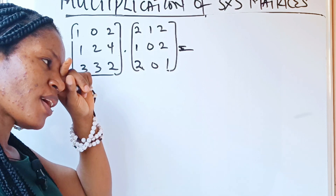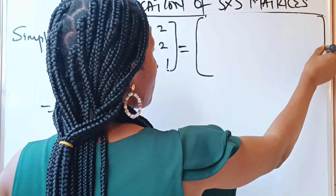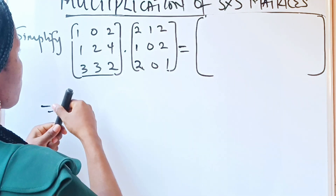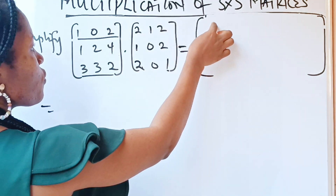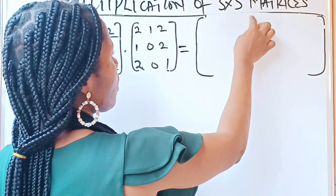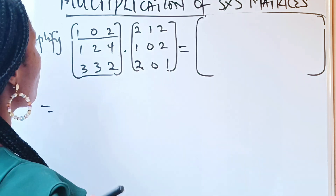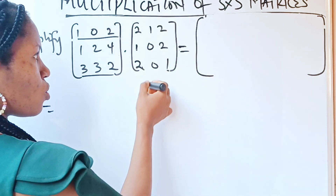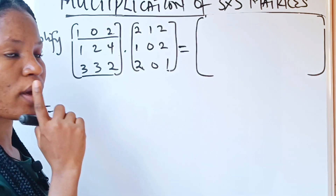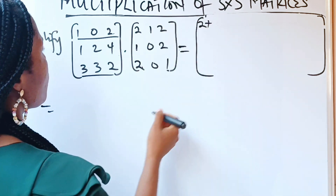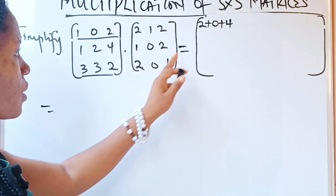This is the second example. Just stick with me — this will be faster because I believe you understood what I was doing. We open our brackets and start. As usual, we begin with the first row. This first row multiplies the first column: 1 times 2, plus 0 times 1, plus 2 times 2, giving 2+0+4=6.